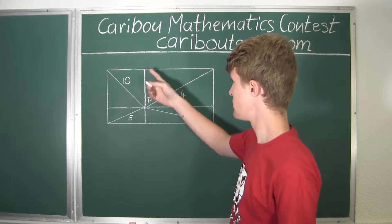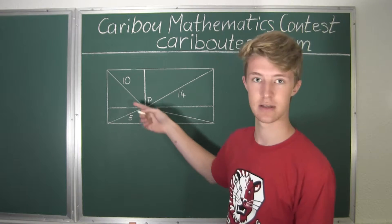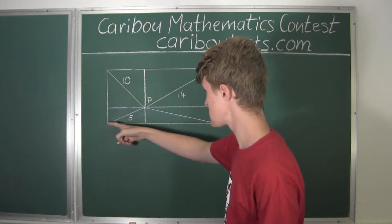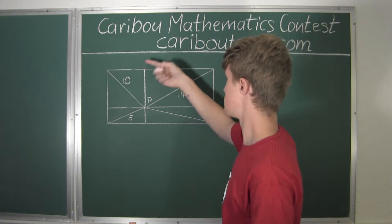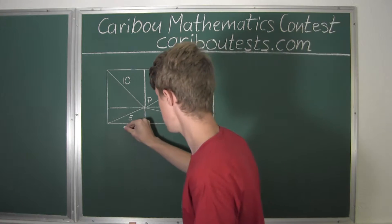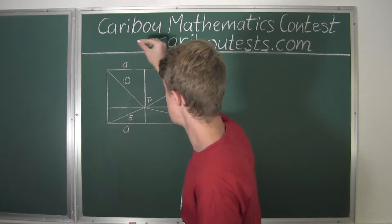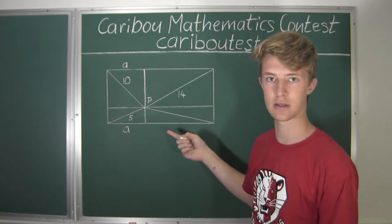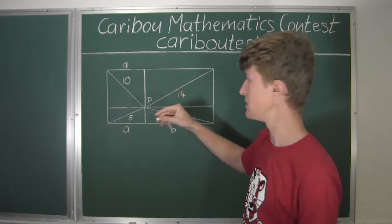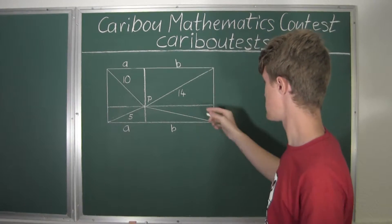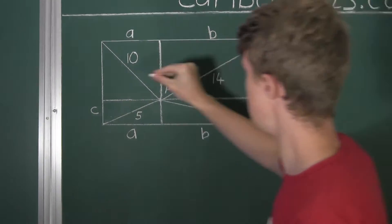The purpose of drawing these two extra parallel lines is to have two line segments with lengths that are equal. The length of this line segment here is the same as the length of this line segment up here. So if we call the length of this line segment A, we can also call the length of this line segment up here A. Likewise, if we call this line segment B, then we can call this one up here also B. And this can also be applied to the other side: here C and C, and D and D.